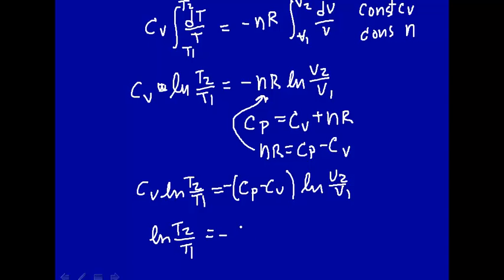And that's equal to minus cV natural log of V2 over V1 minus cP natural log of V2 over V1.